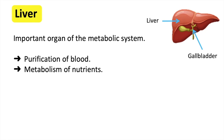For example, the liver breaks down carbohydrates into sugar. Depending on the body's needs, the liver will send this sugar back to the body to be used as energy. Or, it stores some nutrients that are left over if the body doesn't need them straight away. The stored nutrients can then be used later on, when the body needs it.